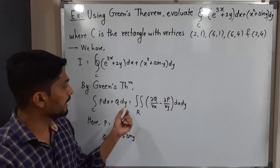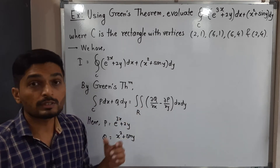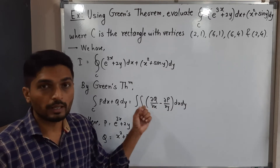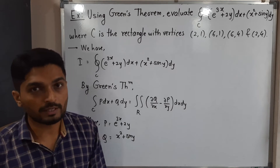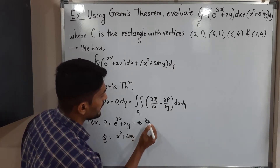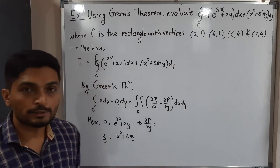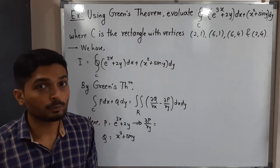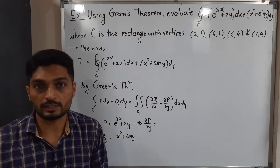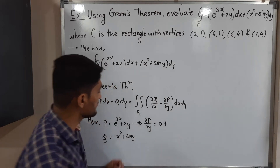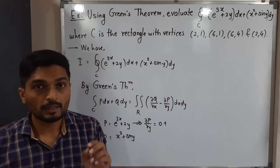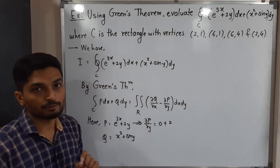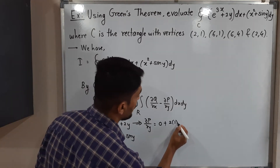We need to find ∂P/∂y and ∂Q/∂x. For ∂P/∂y: since there is addition, we take separate derivatives. The derivative of e^(3x) with respect to y is 0, since it is a function of x only. The derivative of 2y with respect to y is 2. So ∂P/∂y = 2.